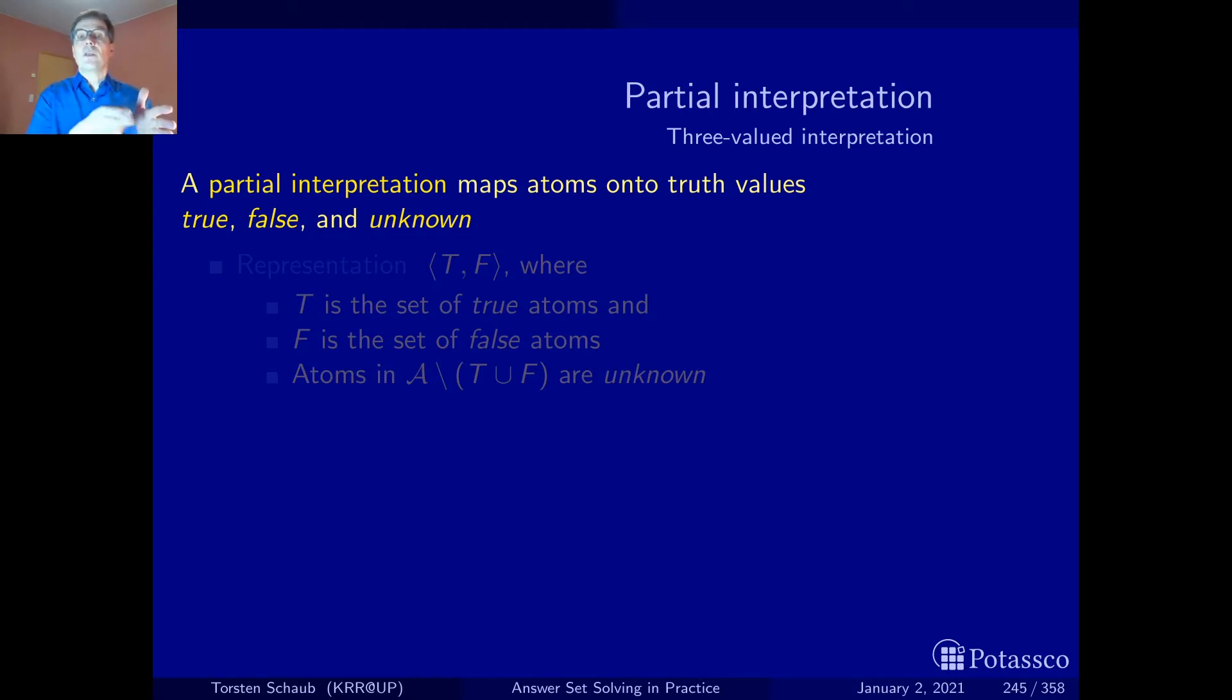Partial or three-valued interpretations provide us with a logical means to characterize the states of a computation of stable models. They provide a third truth value, unknown. At the very beginning when no computation has happened we do not know anything. Each variable is assigned the truth value unknown. Then successively as we do more computations more atoms get a truth value true or false.